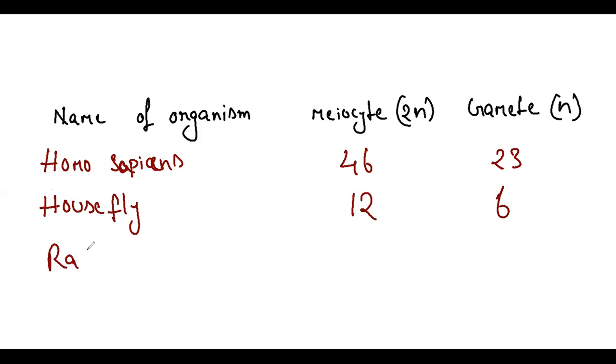Rat - it is 42 in meiocyte and 21 in gamete. Dog - it is 78 and half is 39. Cat - it is 38. Cat is 38, dog is 78. Half is 19.